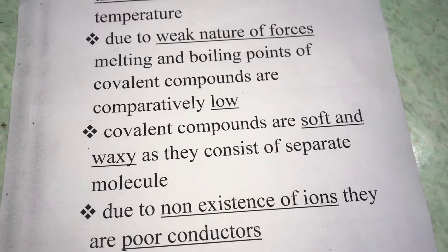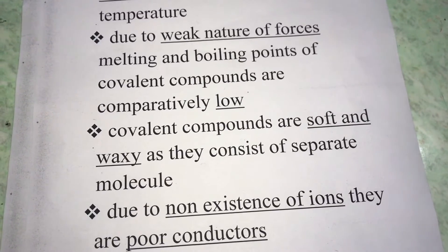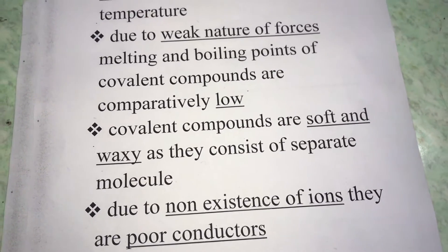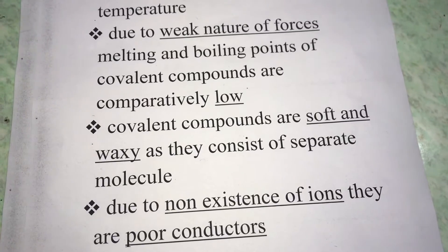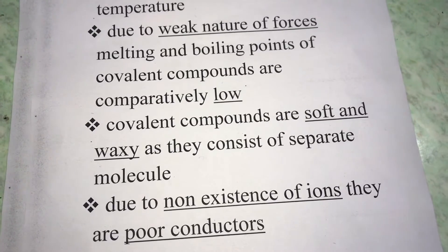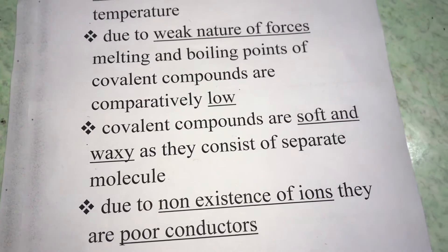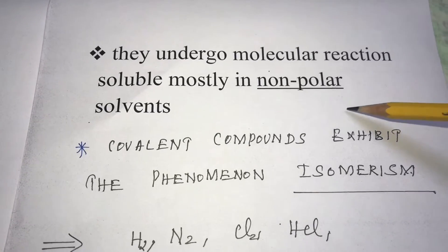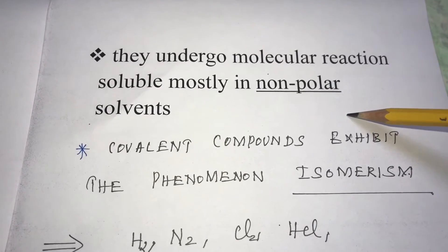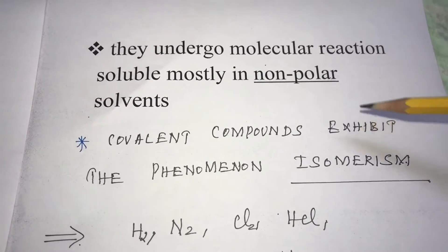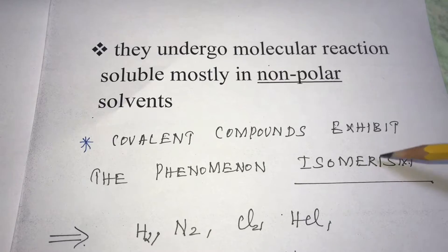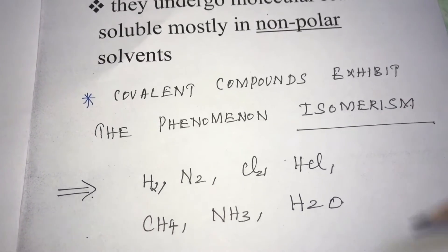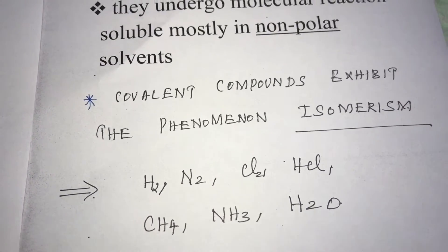Due to the non-existence of ions, covalent compounds are poor conductors of electricity — they are present as atoms in a molecule rather than in ionic form. They undergo molecular reactions and are soluble in non-polar solvents.